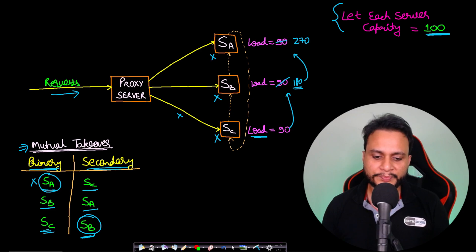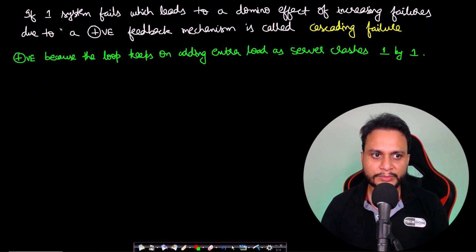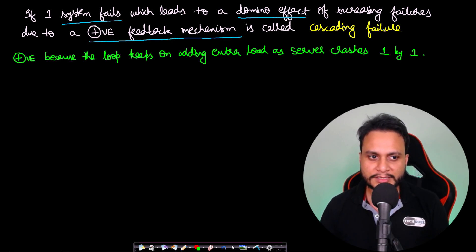Now in simple terms, if we talk about what is a cascading failure: if one system fails which leads to a domino effect of increasing failures due to a positive feedback mechanism, is called a cascading failure.